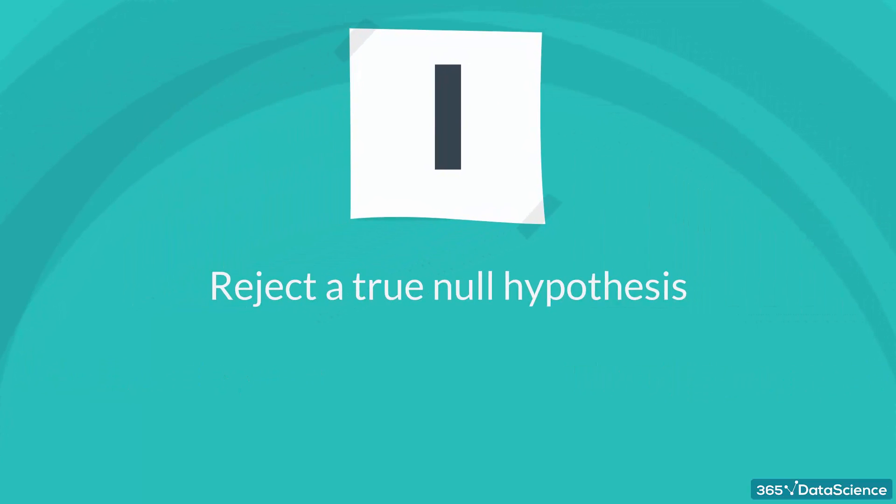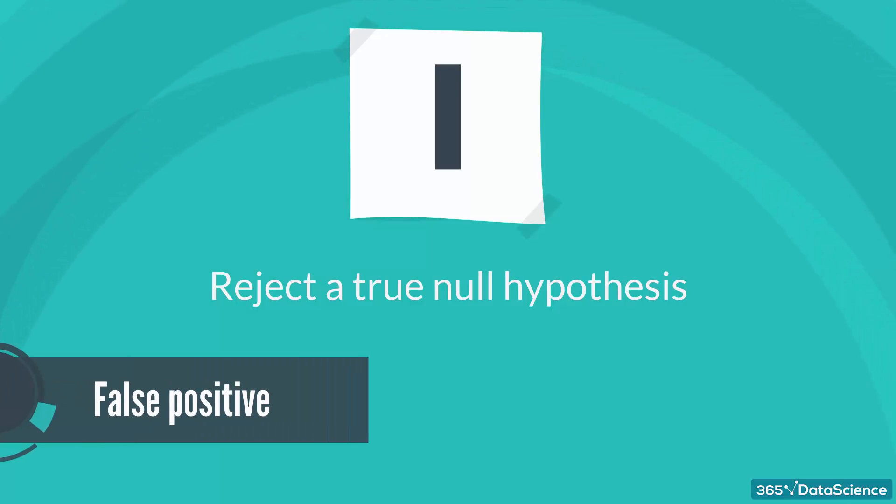Type 1 error is when you reject a true null hypothesis and is the more serious error. It is also called a false positive. The probability of making this error is alpha, the level of significance.